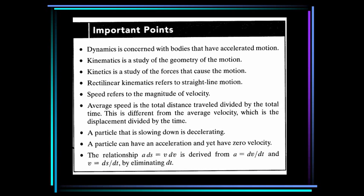Some important points. Dynamics is concerned with bodies that have accelerated motion. Kinematics is the study of the geometry of the situation. Kinetics is the study of the forces that cause the motion. Rectilinear kinematics refers to straight line motion. The speed refers to the magnitude of the velocity. The average speed is the total distance traveled divided by the total time. This is different from the average velocity, which is displacement divided by time. A particle that is slowing down is decelerating. Note that a particle can have an acceleration and yet have zero velocity.